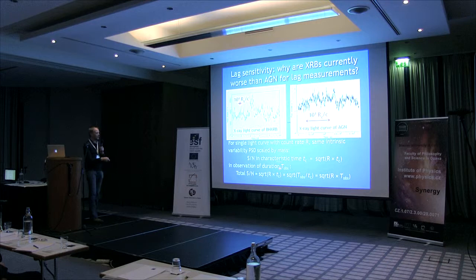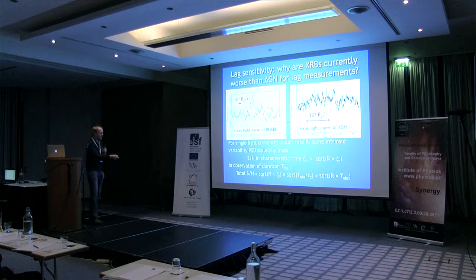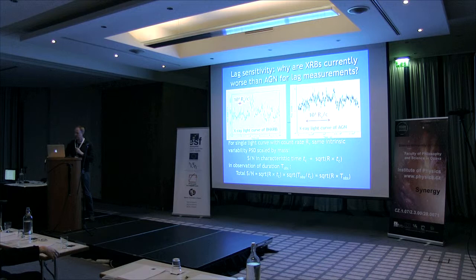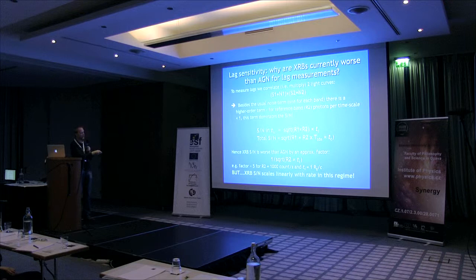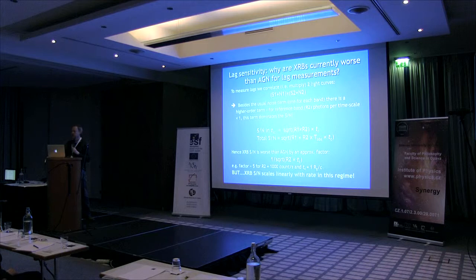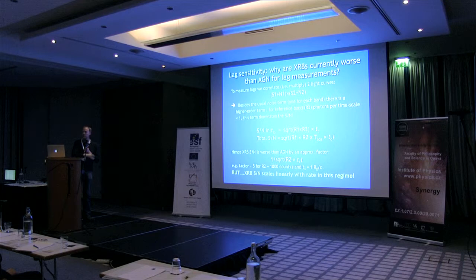However, if you have a long observation, you also scale that with the number of cycles - how many timescales have you counted in your observation. For X-ray binaries that's huge, because the timescales are really short. In the end, that characteristic timescale effect cancels out, and it just depends on the count rate and the observing time. When you measure a lag, you're multiplying two light curves together, and that means you have an extra cross term when you multiply the noise. That cross term depends on your reference band. If you've just got very few photons per timescale in that reference band - less than one - that cross term dominates the signal to noise. That's true for X-ray binaries, so they have this extra term in the error that scales linearly with count rate.